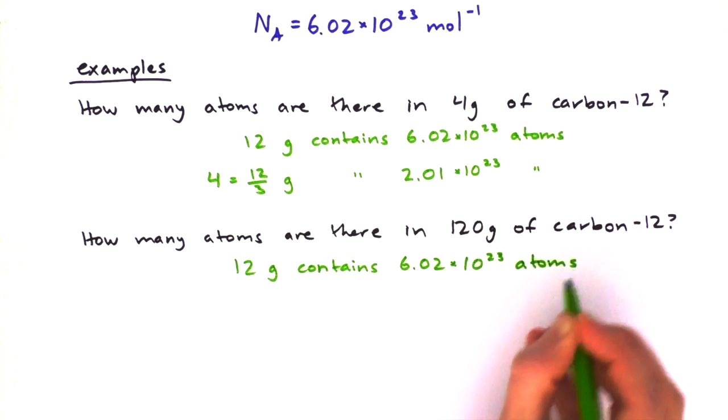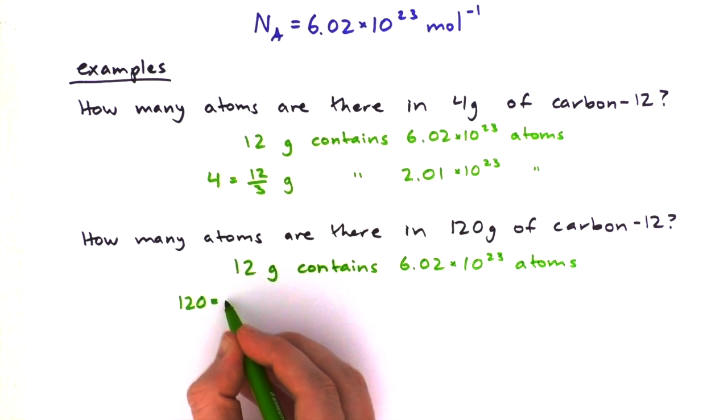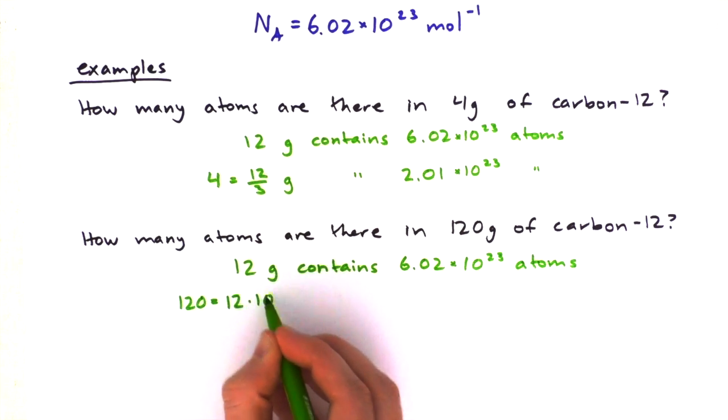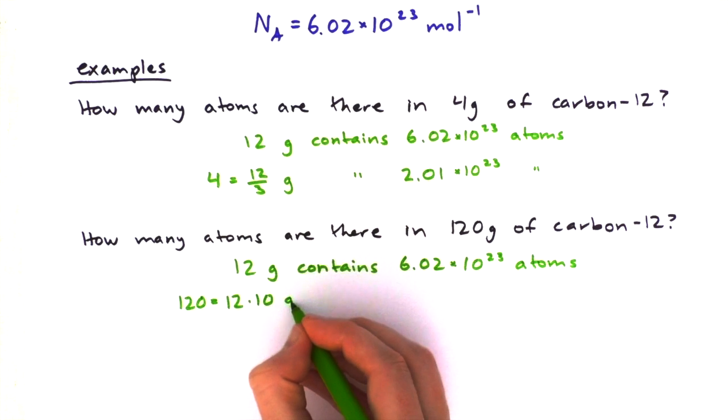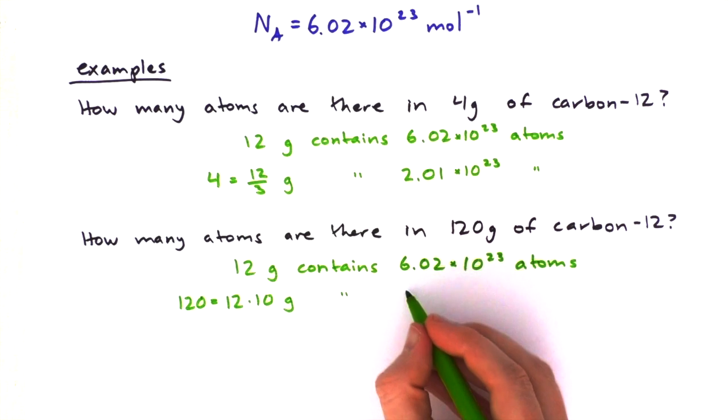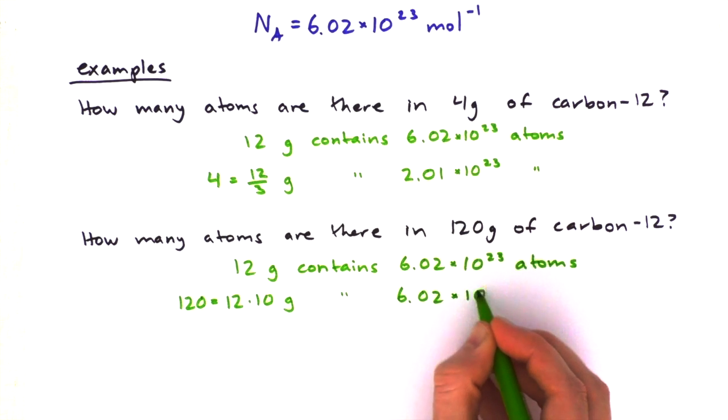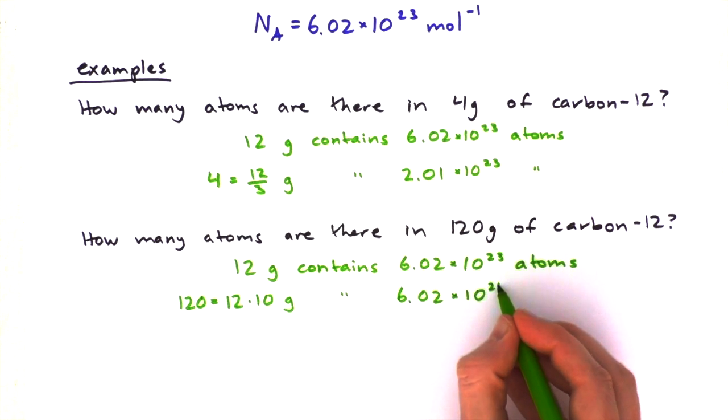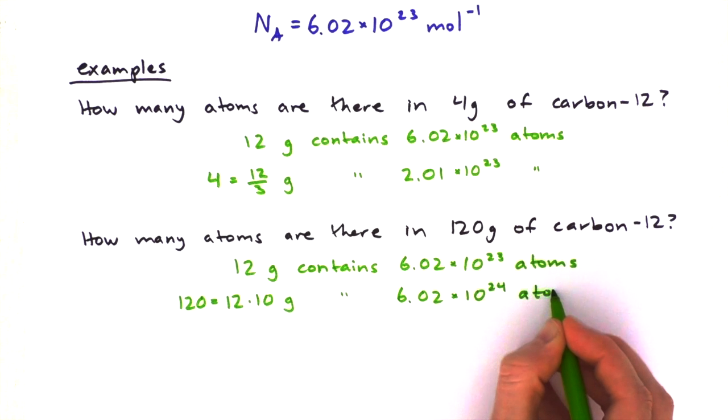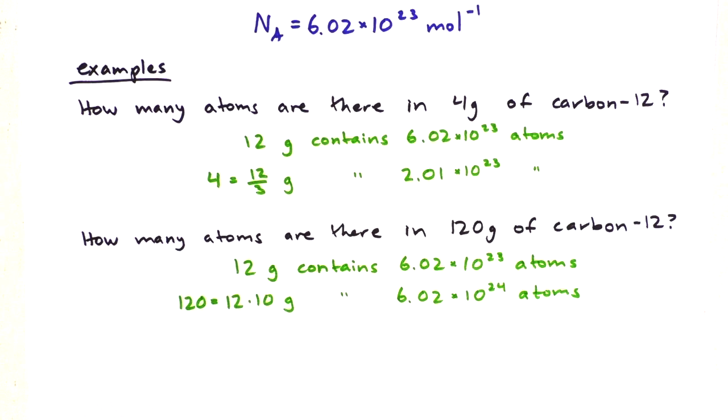120 grams is simply 12 times 10 grams, so we've got 10 times as much. We can just change the power to 24, so we're going to have 6.02 times 10 to the power 24 atoms.